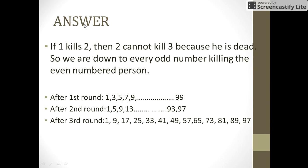Let us see the solution. If first numbered person kills second then second cannot kill 3 because he is dead. So it means that we are down to every odd numbered person killing every even numbered person in the first round.